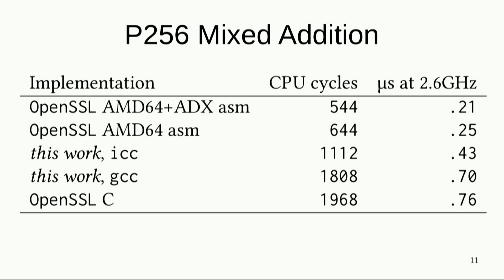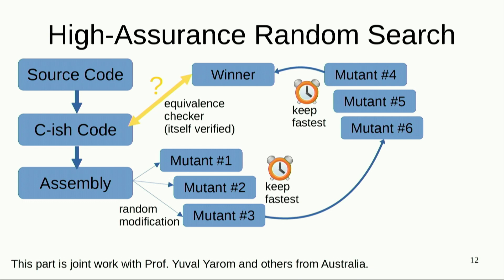We wanted to close that gap, so we worked with collaborators at the University of Adelaide and developed a new system. Starting from the top left and going counterclockwise: take source code, lower it into C-like code with the component described previously, then generate assembly with some arbitrary choices, mutate that assembly to produce variations — different instructions, reordered instructions — benchmark all of them, keep the fastest one, and repeat until we have the fastest code. We also built a checker with the most rigorous kind of mathematical proof that establishes the winner computes the same mathematical function as the original C-like code, so none of that big optimization cycle needs to be trusted.